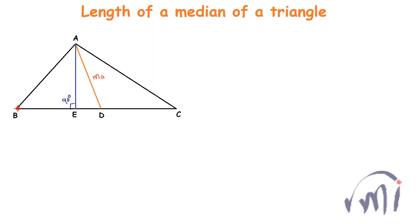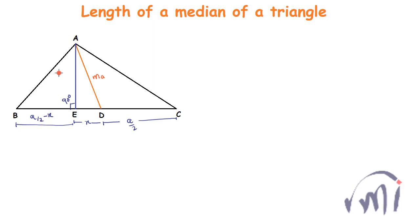The length of the side opposite to vertex A is represented as small a. Since D is the midpoint of BC, DC will be equal to a divided by 2. If I assume DE as equal to x, then BE will be equal to a/2 minus x. The side opposite to vertex B is denoted as small b, and the side opposite to vertex C is denoted as small c.